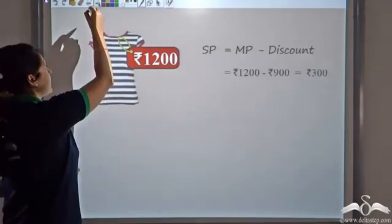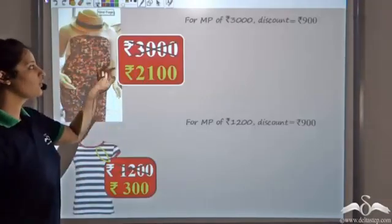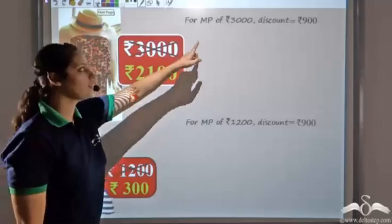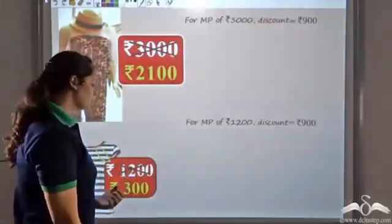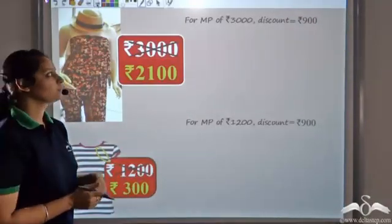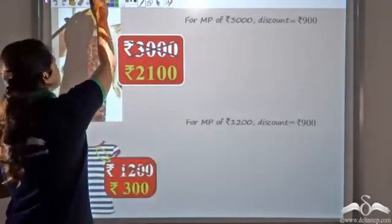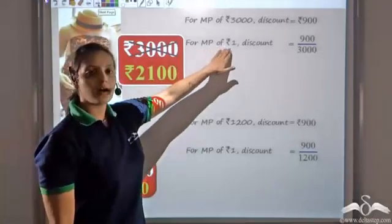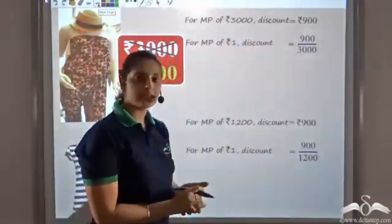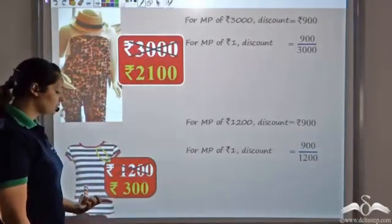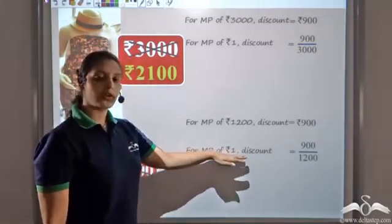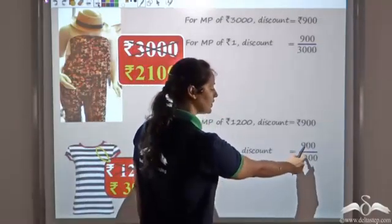Rajiv tries to analyse the situation. He observes that for the dress marked at Rs.3000 he gave a discount of Rs.900, and for the t-shirt marked at Rs.1200 he again gave the same discount of Rs.900. So he tries to find the discount for a marked price of Rs.1 using the unitary method: for the dress, it is Rs.900 divided by Rs.3000 per rupee.